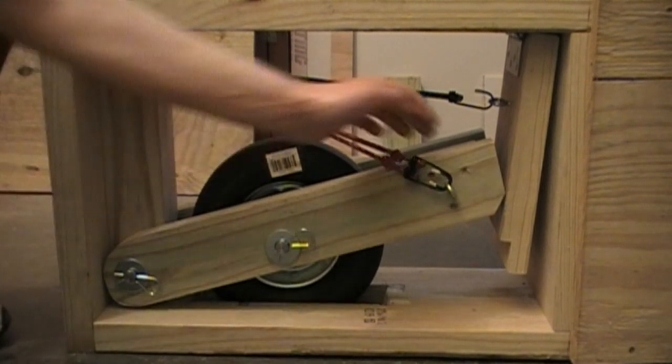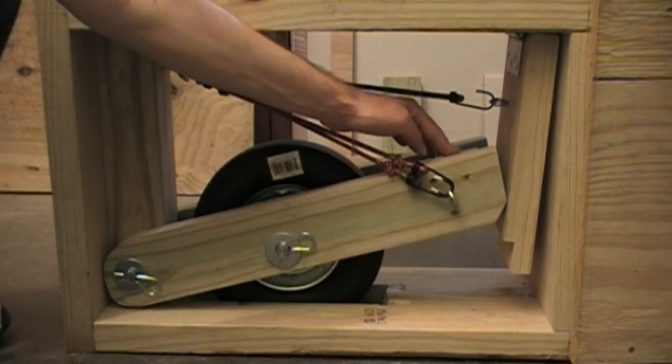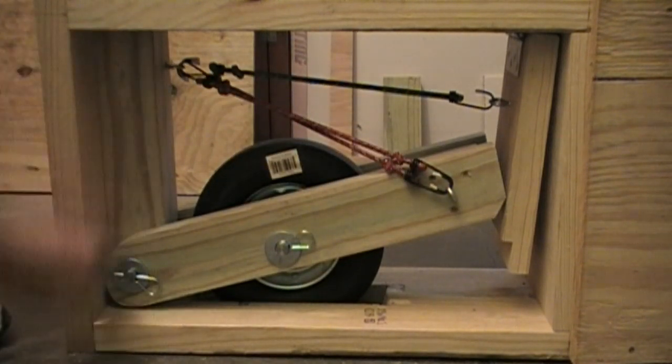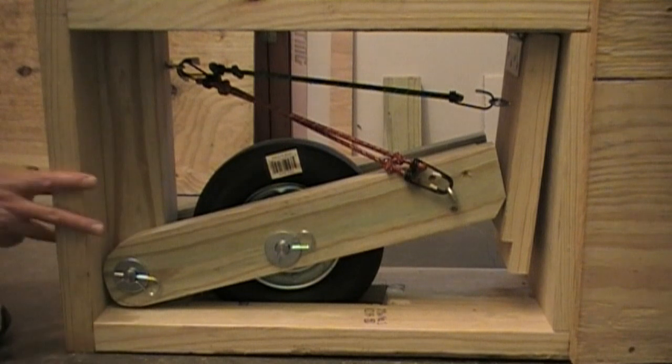So that's kind of what it is, I got some blocking in between the two 2x4s up here and this blocking here fits tight between the top and the bottom and is screwed through from the back.